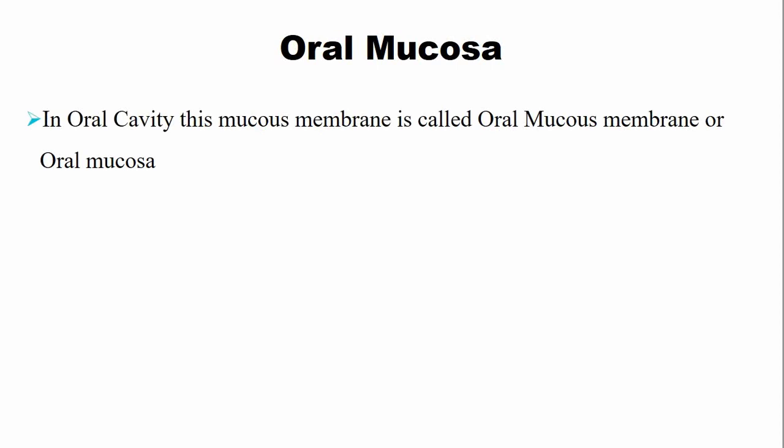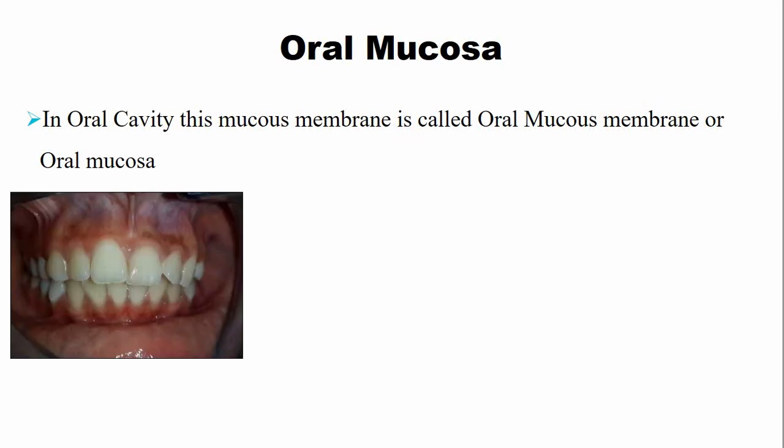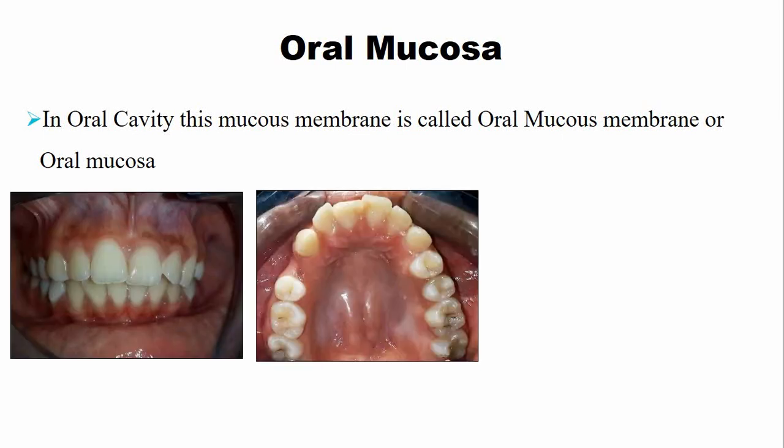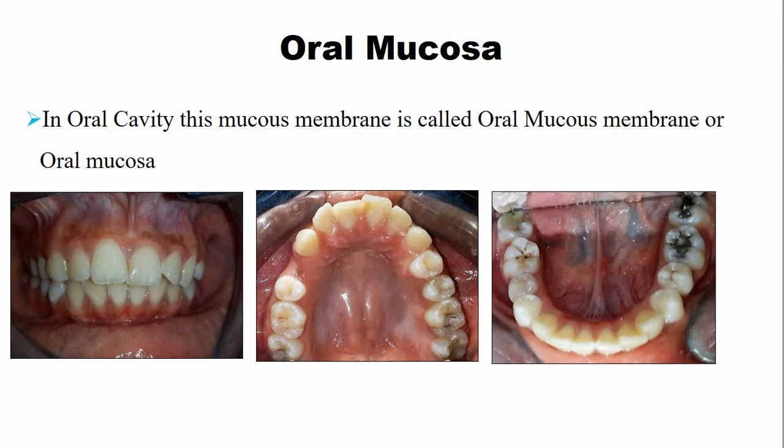In the oral cavity, this bright pink mucous membrane is known as the oral mucous membrane or oral mucosa. These are the pictures in which you can see all of this is the oral mucosa.